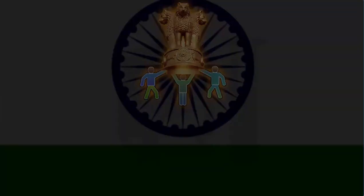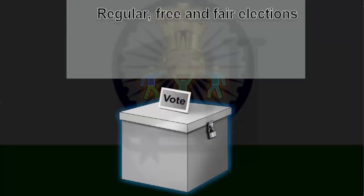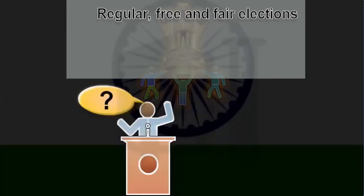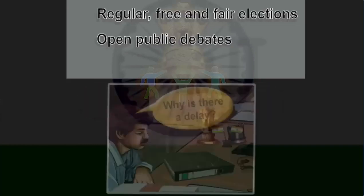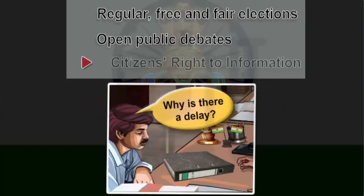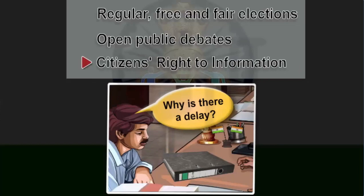The first measure of accountability is regular, free and fair elections. The second measure is open public debate on major policies and legislations. The third measure is the citizens' rights to information about the government and its functioning.